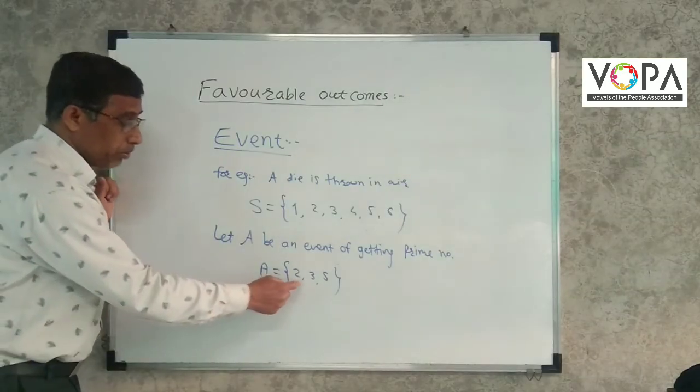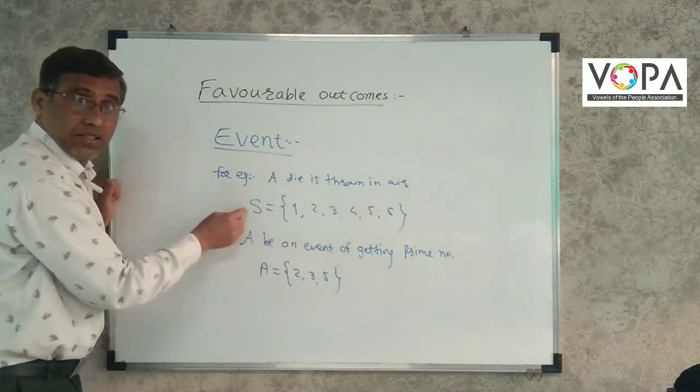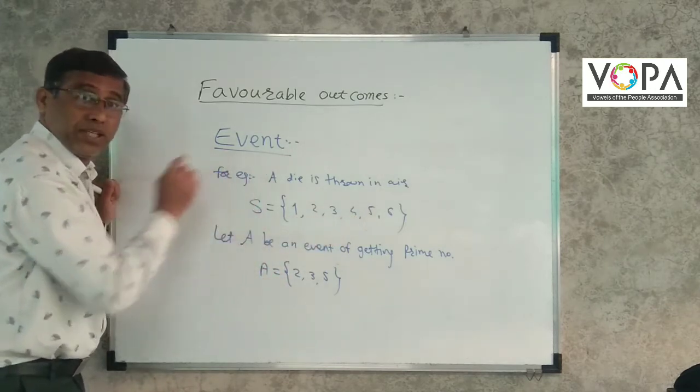These elements 2, 3, 5 are in the sample space. So A is a subset of S. This means an event is a subset of a sample space.